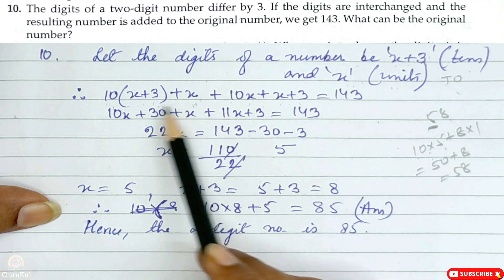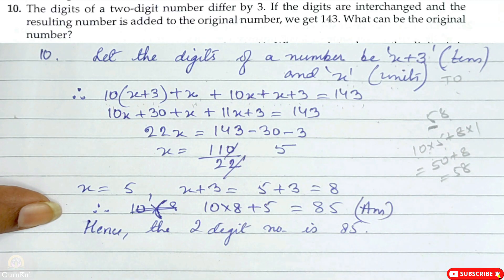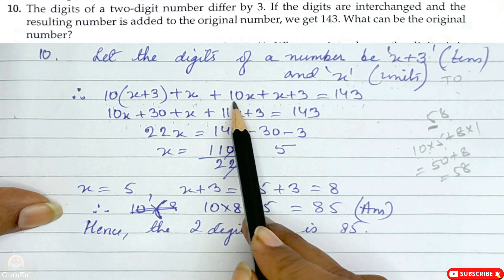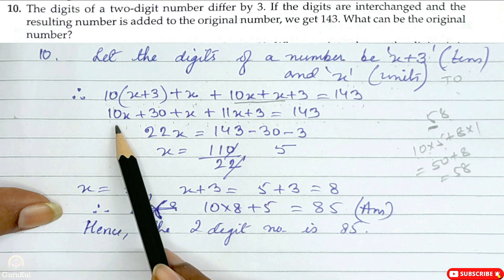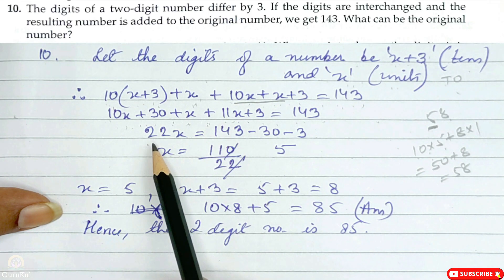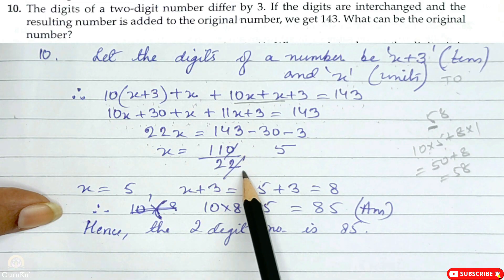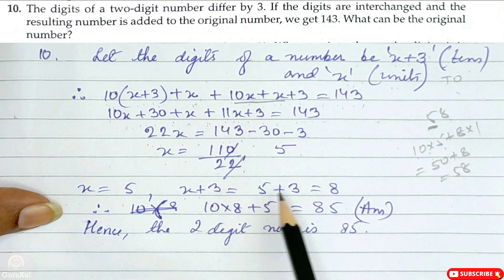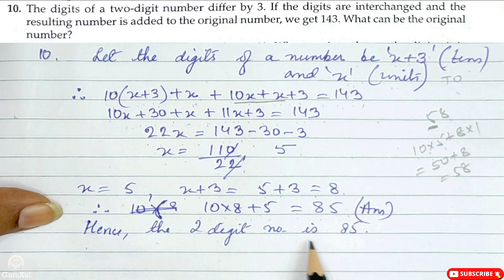Adding the two numbers gives 143. Removing the brackets: 10x plus 30 plus x plus 10x plus x plus 3 is equal to 143. So 22x plus 33 is equal to 143, giving 22x is equal to 110. Hence x is equal to 110/22 which is 5. So x plus 3 is 8.